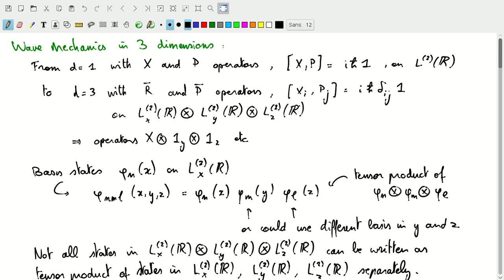This will now be defined on a tensor product space, a tensor product Hilbert space of the X Hilbert space, the Y Hilbert space, and the Z Hilbert space. In some sense, the X operator in our one-dimensional case is the tensor product of the operator X with the identity operator on Y and the identity operator on Z.